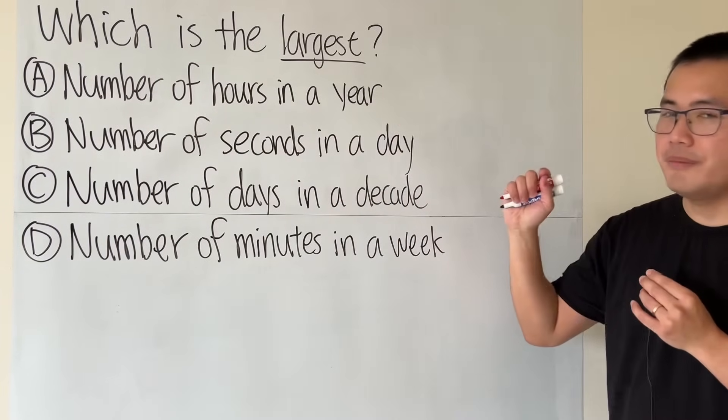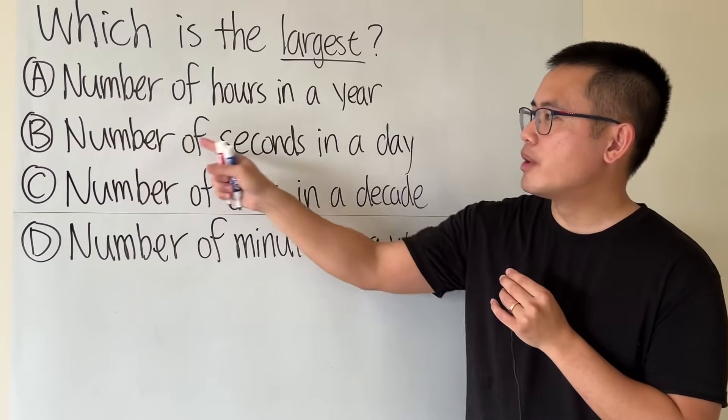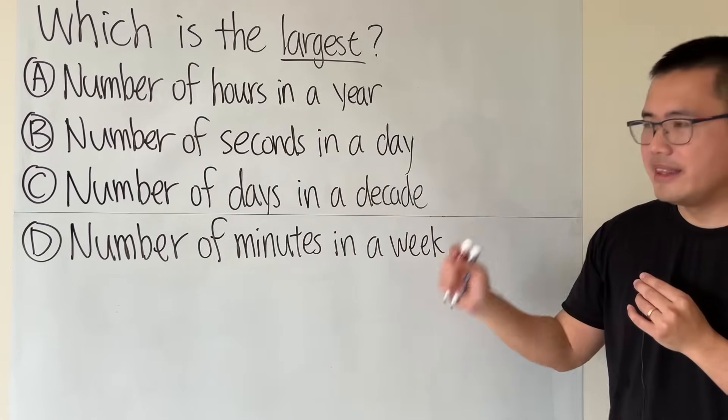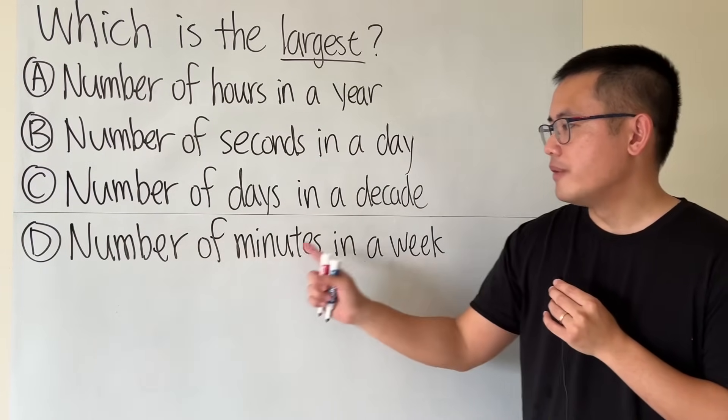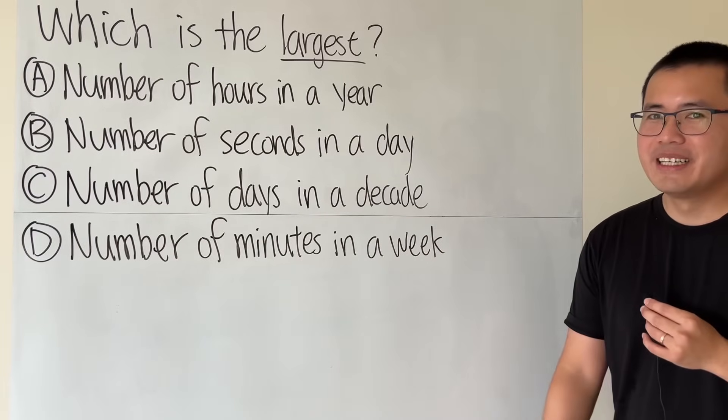Okay let's take a look. The first option is the number of hours in a year, and then the second option is number of seconds in a day, and then we have number of days in a decade, and lastly we have the number of minutes in a week.